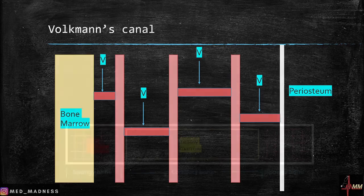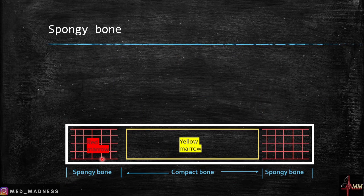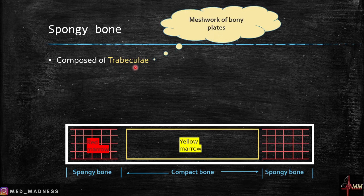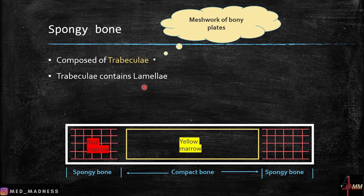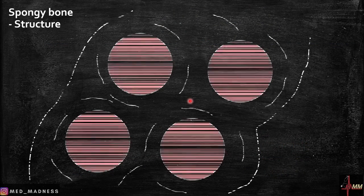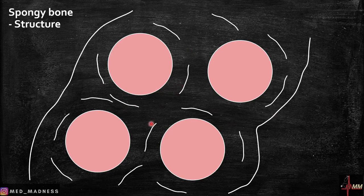Now let's look at the spongy bone, which is present at the ends of long bones and in flat bones. It contains a meshwork of bony plates called trabeculae, with spaces between them containing bone marrow. The trabeculae contain lamellae — sheets of bone — and between the lamellae are lacunae where osteocytes are present.